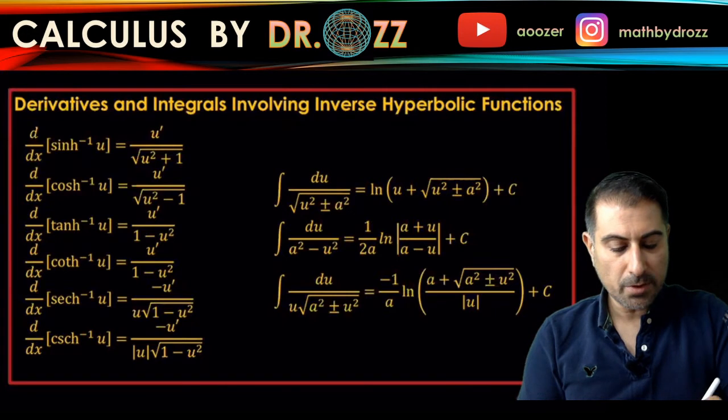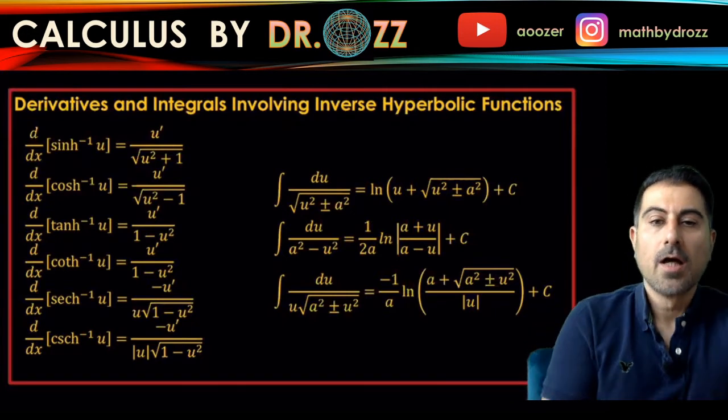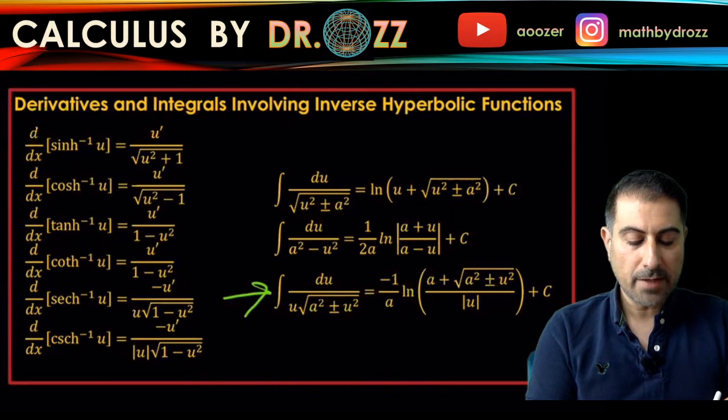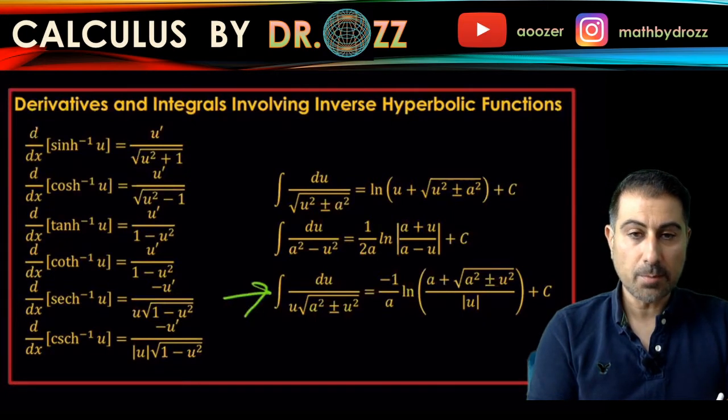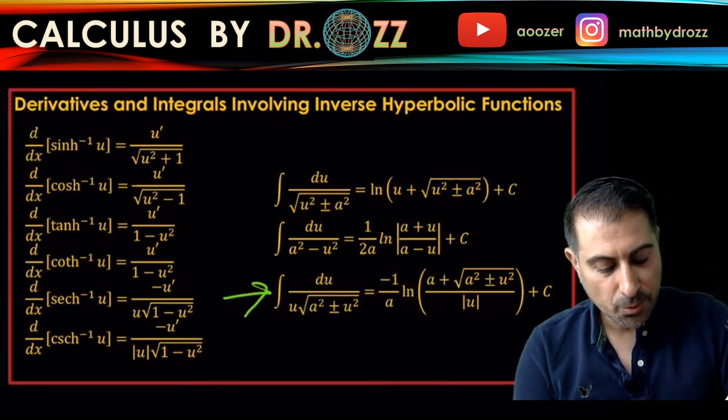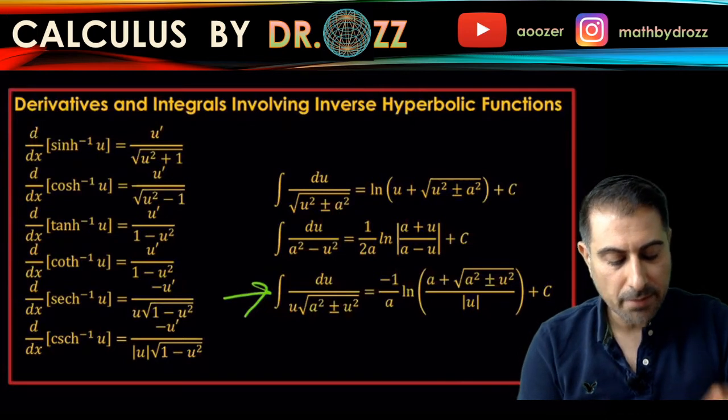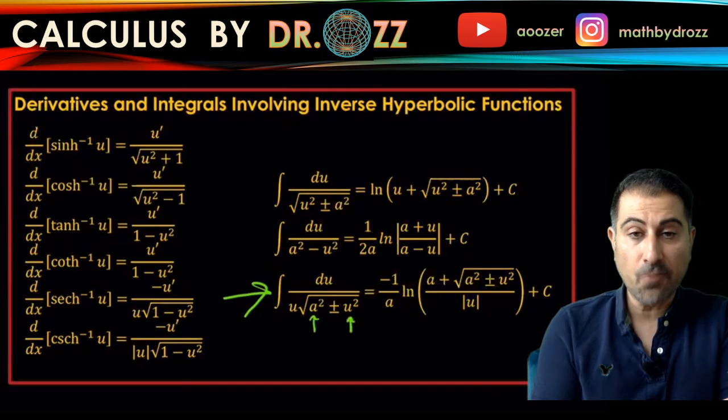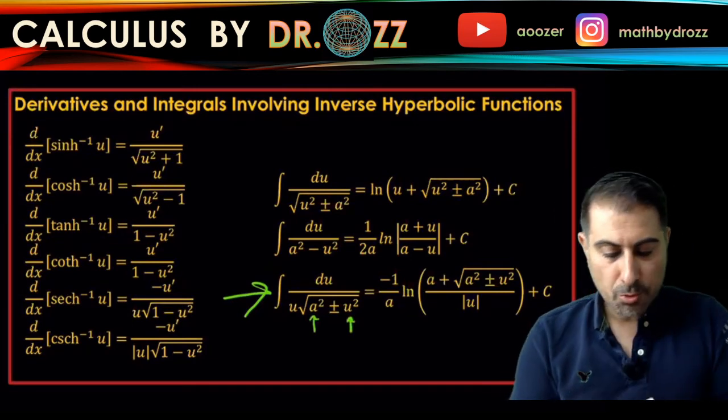In the last formula, check this out for the integration. So you have u in radical a squared minus u squared. So we have this version here, first number and then the variable. So I think we're going to make use of this formula for u equals 2x.